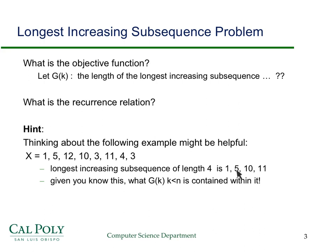We know the longest increasing subsequence is 1, 5, 10, and 11. So given that you know this, so GN is equal to 4, given that you know this, what GK for some K less than N, so some point up to here, in here somewhere, is contained within it.